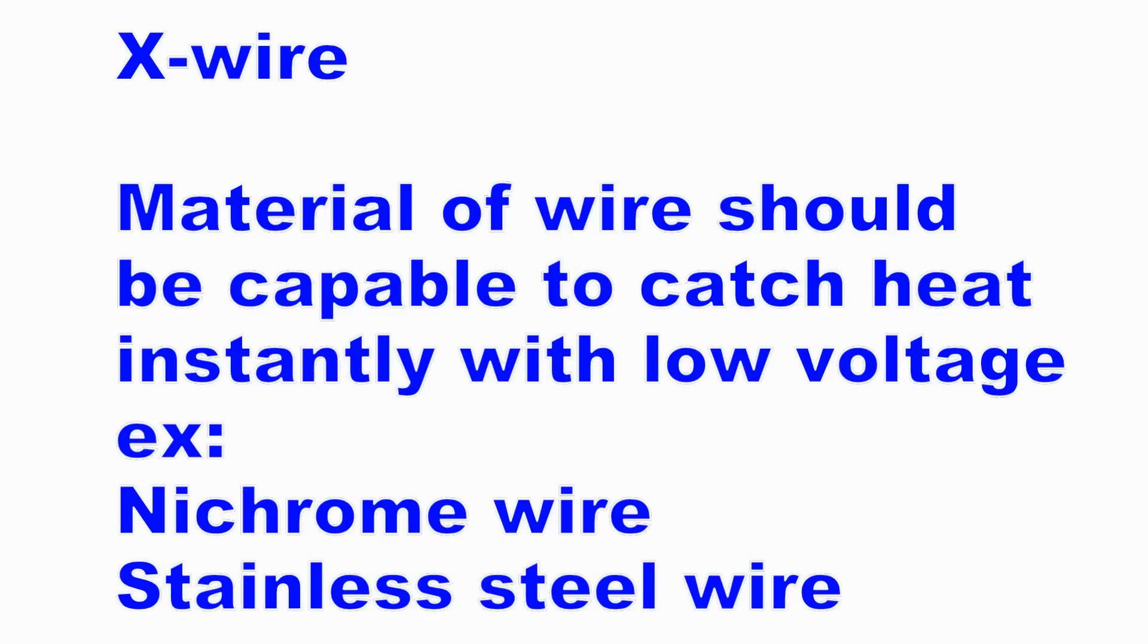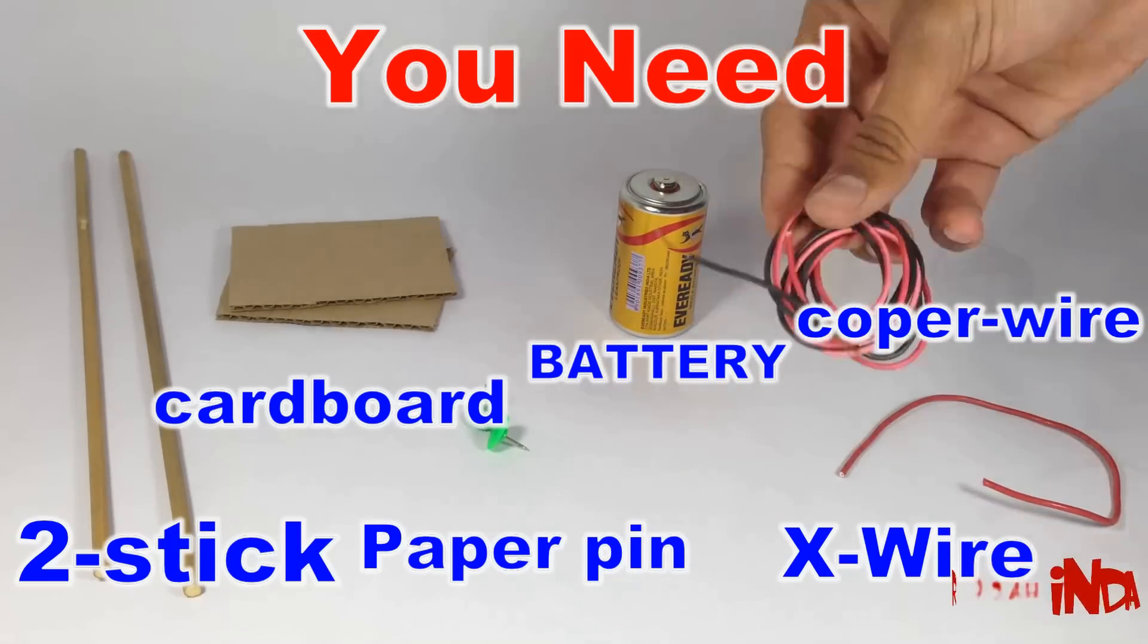Now what is this X wire? The material of the X wire should be capable enough to catch instant heat with low voltage, as example Nichrome wire or stainless steel wire. And next is normal copper wire.